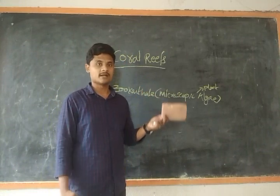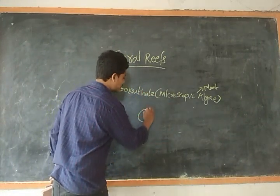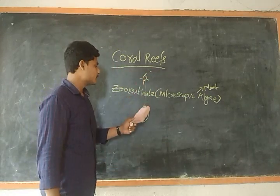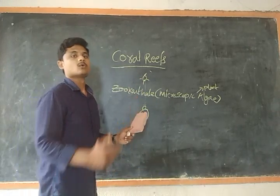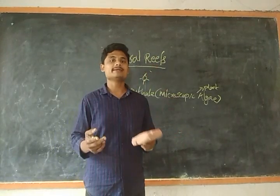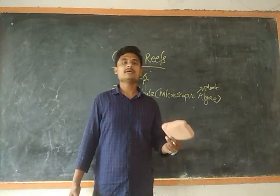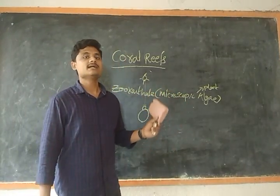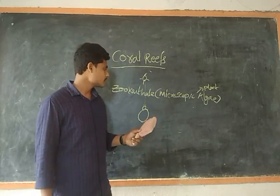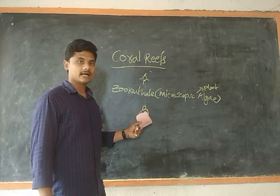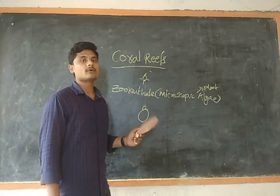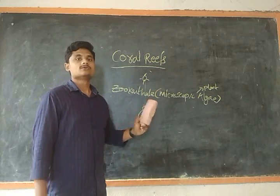If you take the coral and the zooxanthellae are present on it, they can receive direct sunlight from the sun and prepare food through photosynthesis, and provide it to the corals. So corals are living organisms which have a symbiotic relationship with zooxanthellae — the microscopic algae. The zooxanthellae are present on the coral so they get the required sunlight to prepare food through photosynthesis. In return, the coral provides shelter or protection to the algae.